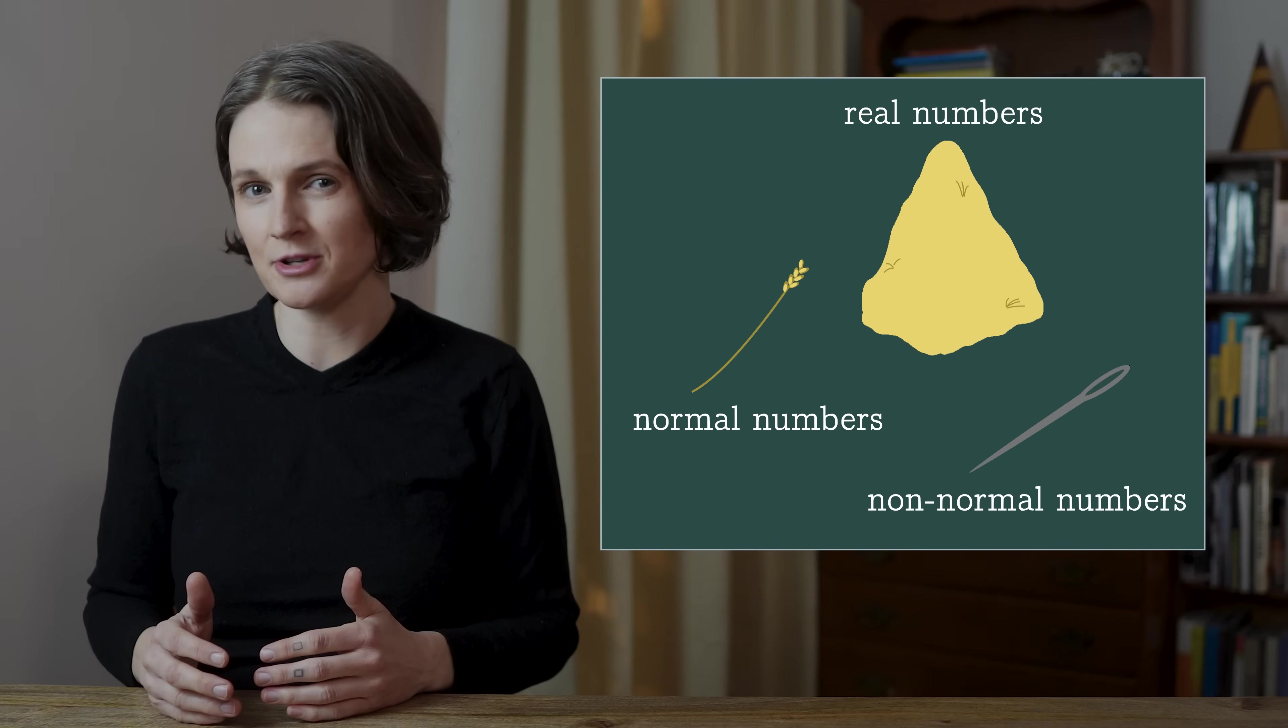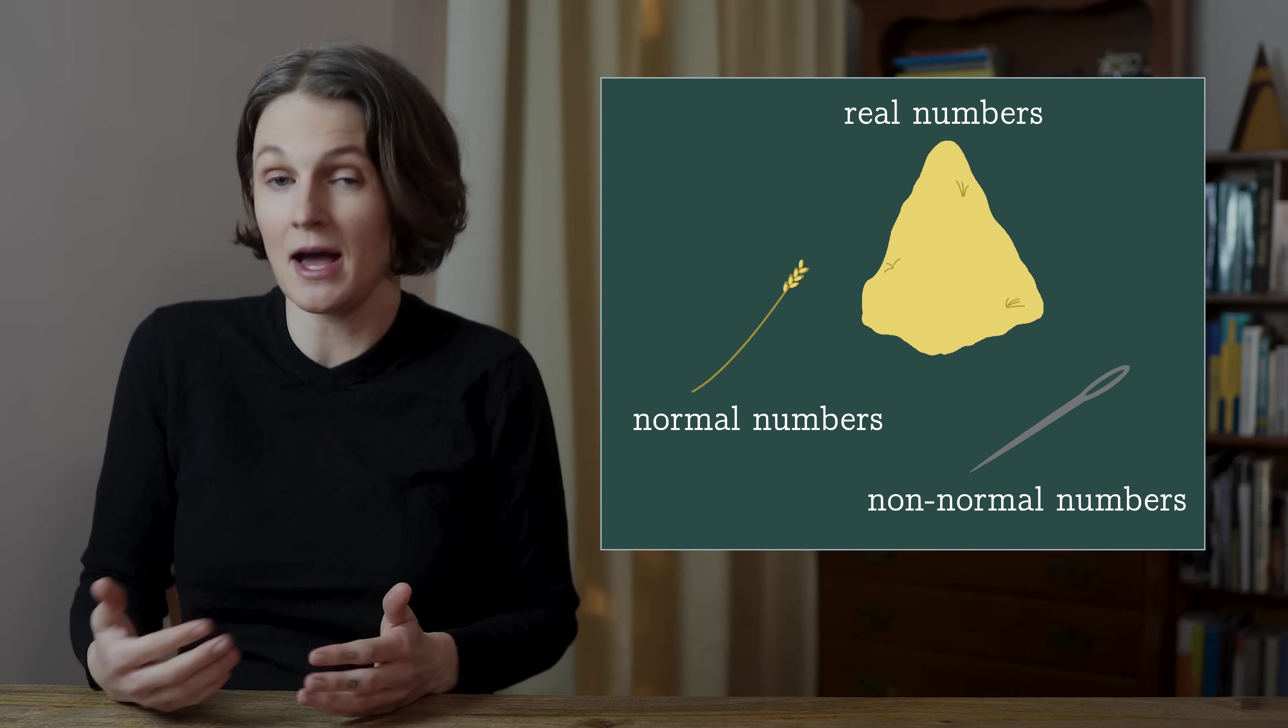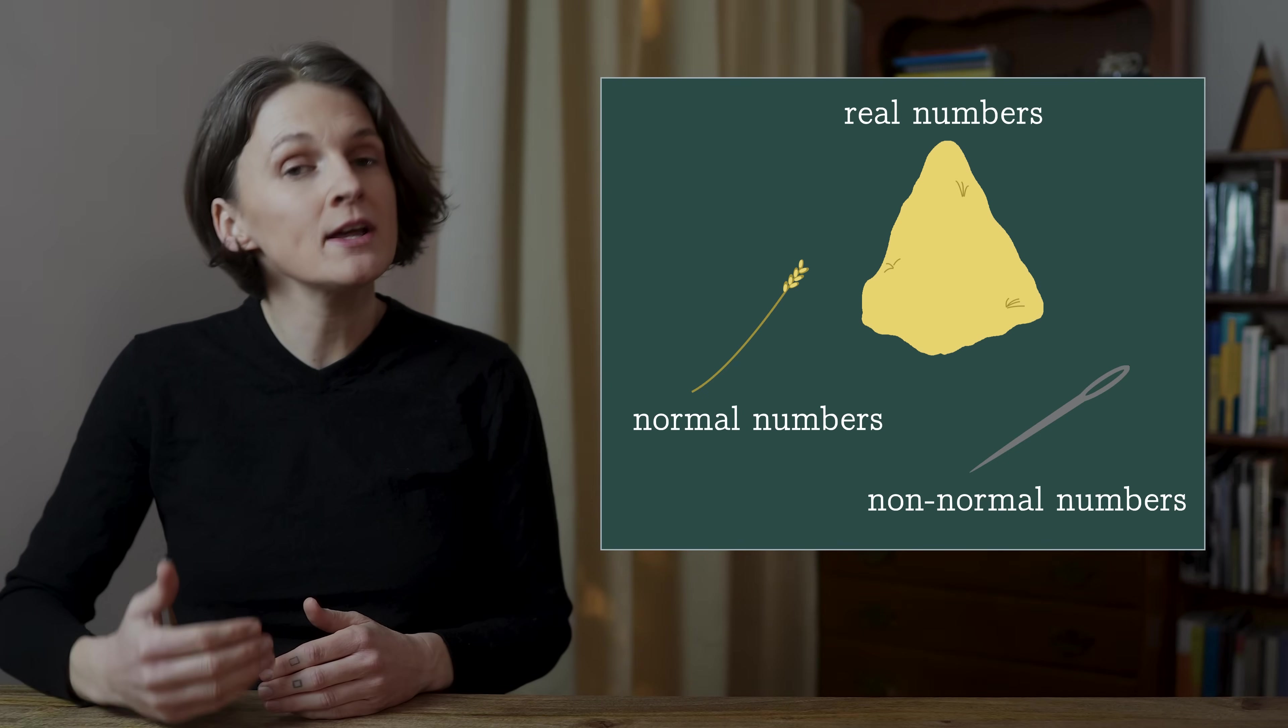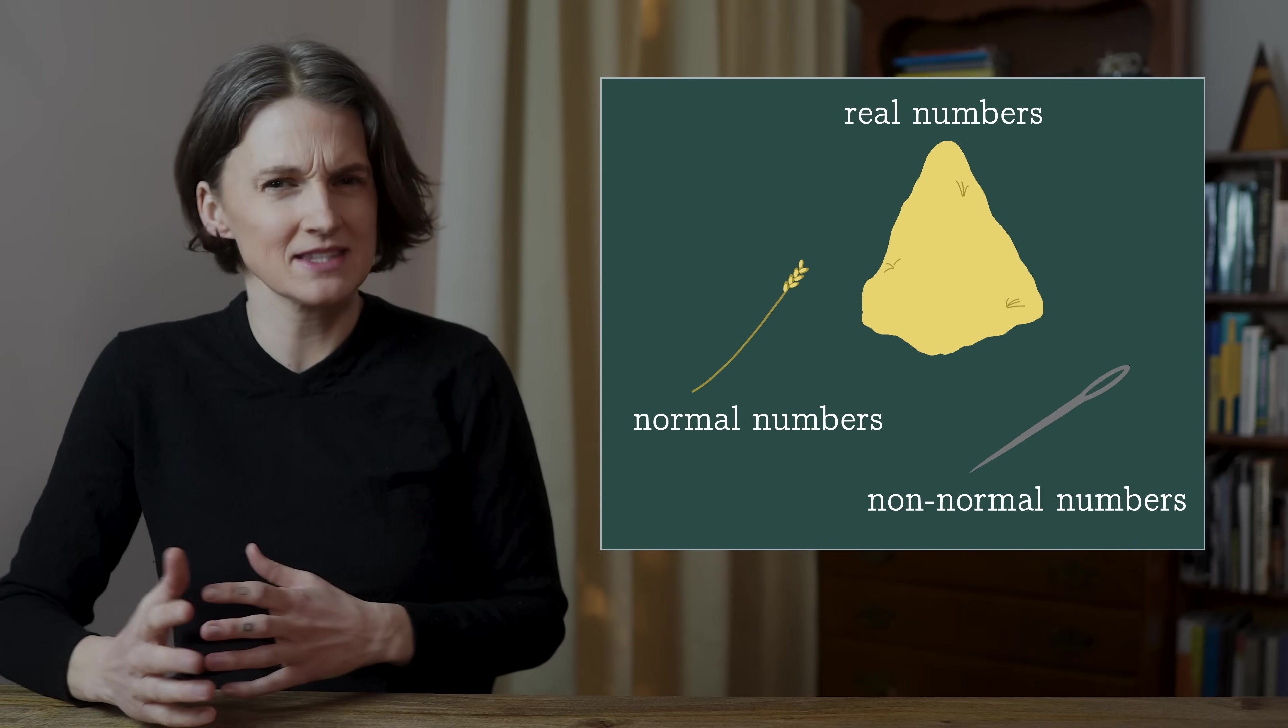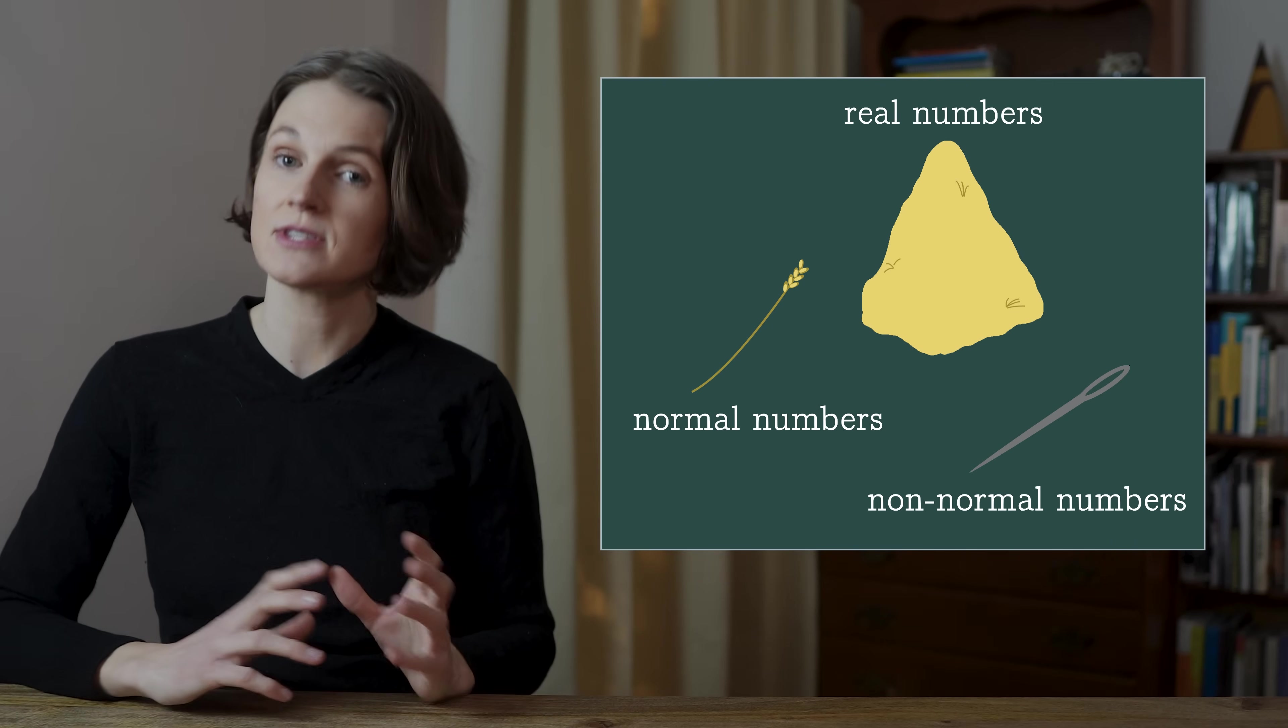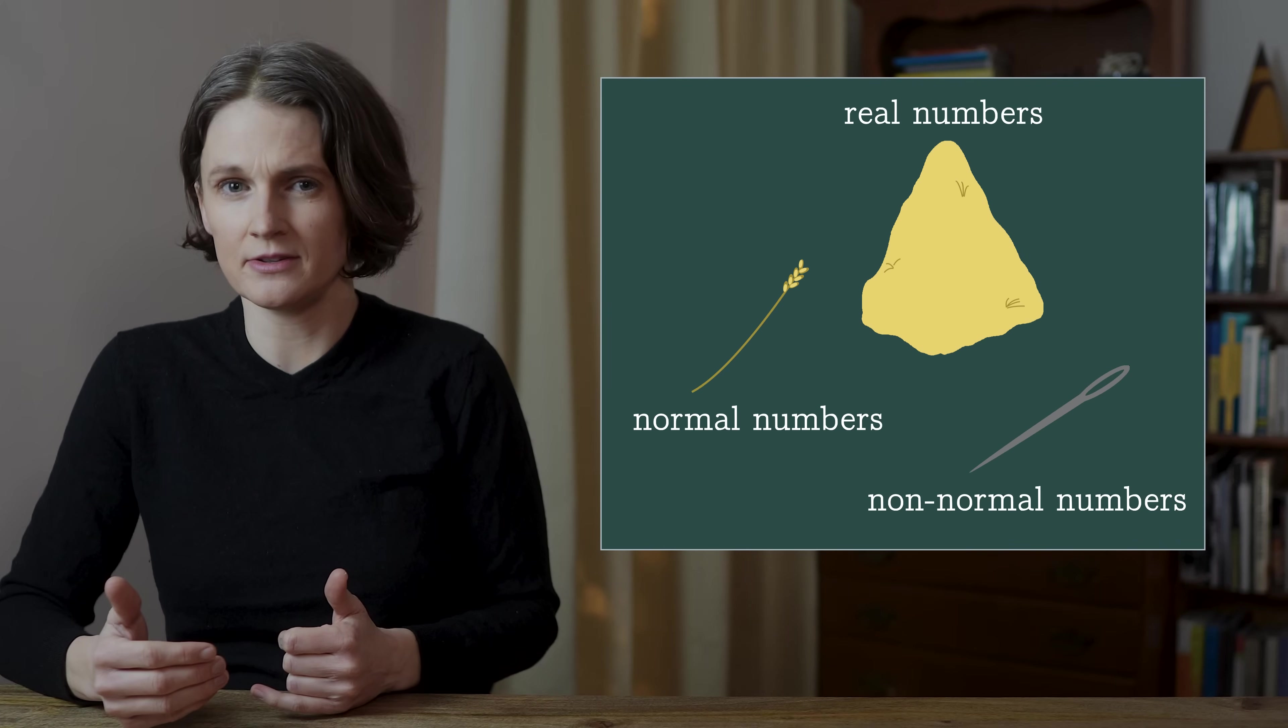That's a technical term. If you reach into the haystack of real numbers and grab at random, there is a 100% probability that you will pull a normal number. That's the hay. And there's a 0% probability that you will pull a non-normal number. Those are the needles.